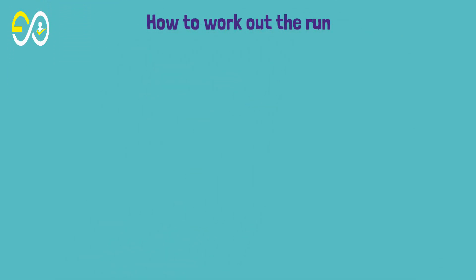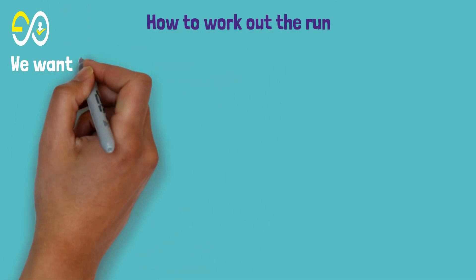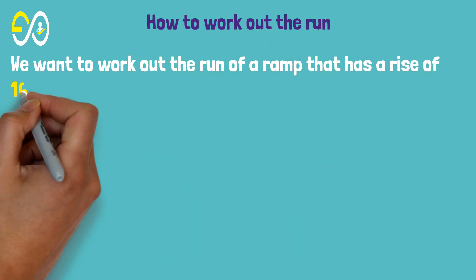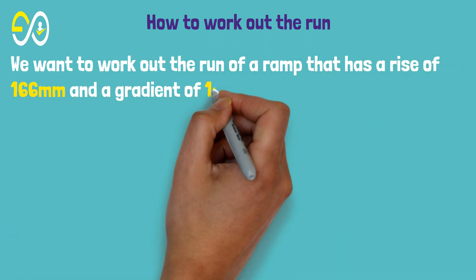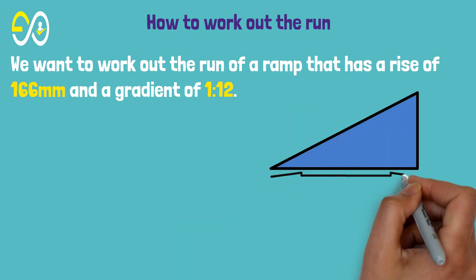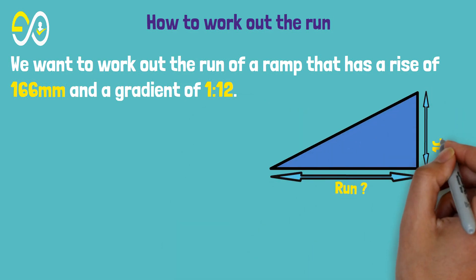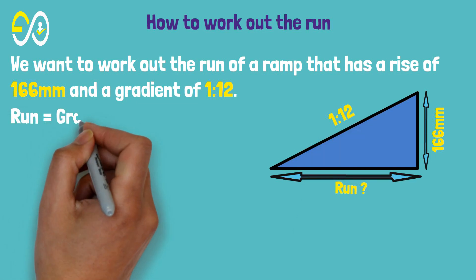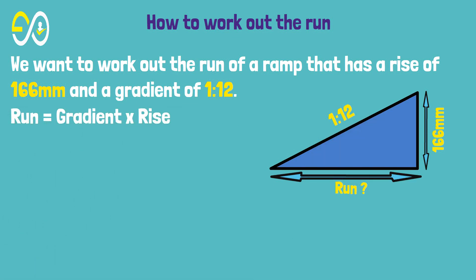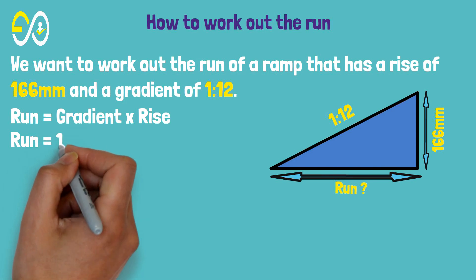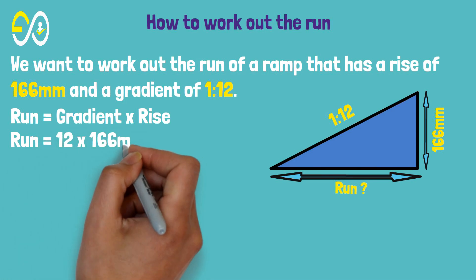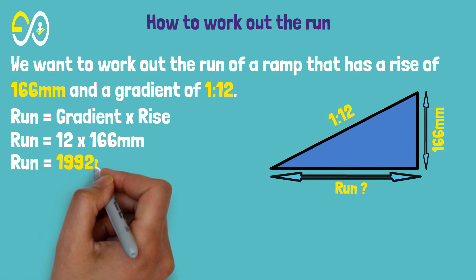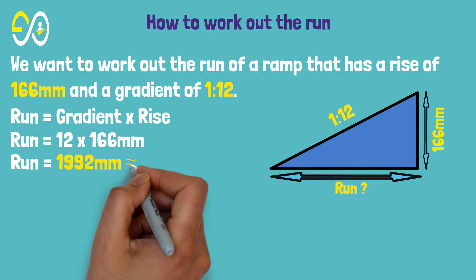How to work out the run. We want to work out the run of a ramp that has a rise of 166 millimeters and a gradient of 1 to 12. Run equals gradient times rise. Run equals 12 times 166 millimeters. Run equals 1,992 millimeters, approximately 2 meters.